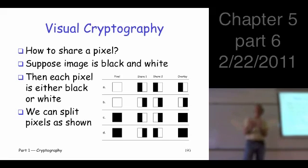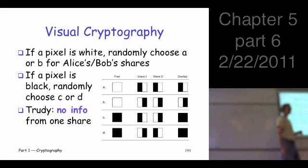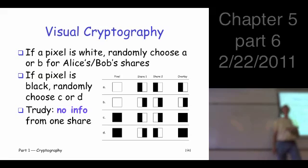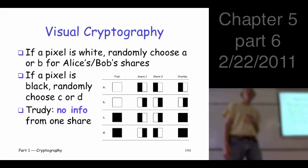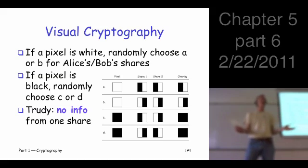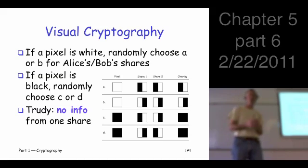What about Alice and Bob - what do they get to see? Gray. Lots of gray. Think of it from Alice's perspective. You look at a pixel - it either looks like this or this. If it looks like this, what does it tell you about the original pixel? It tells you it was white or black. What if the pixel looks like this? Same - it was either white or black. You have no way to know whether it was originally white or black. It provides no information about the original pixel - it's just half white and half black in either case. If they truly flipped a coin, we have no information here.